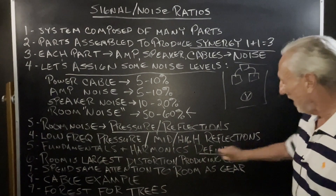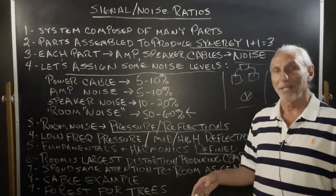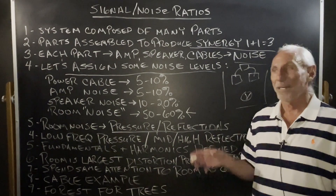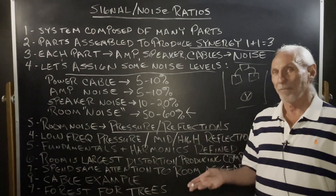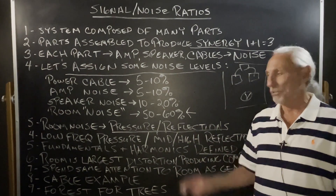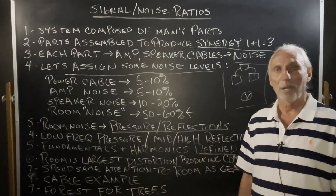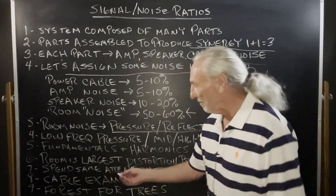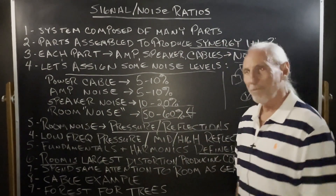We must have the resolution high enough in the room that we hear both the fundamentals and the harmonics. The emotional attachment to our music is in the harmonics. Most rooms destroy harmonics with their size, with the distance from the speakers to the room boundary surfaces and walls — improper material types in the room. There are hundreds of ways to produce distortion in rooms. The room is the largest distortion-producing component of our system.